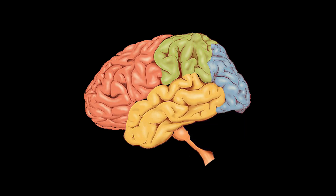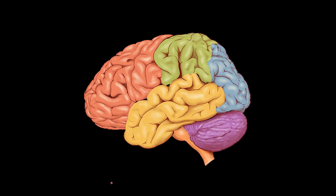But first, let's quickly revise what the cerebellum is and where it is. As the largest structure in the hindbrain, the cerebellum can be found in the back portion of the skull. More specifically, it sits below the temporal and occipital lobes and behind the brainstem.